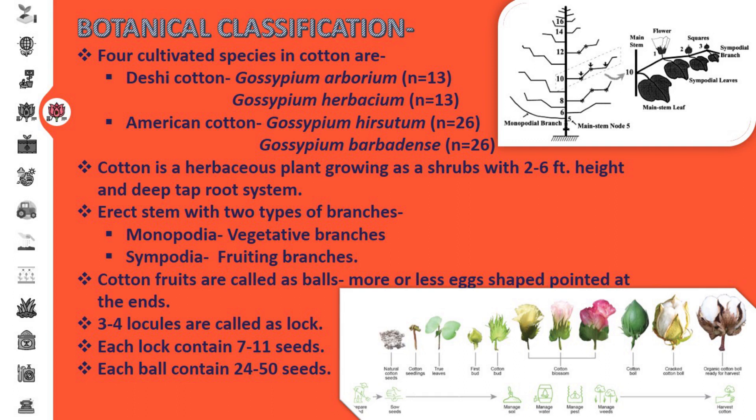In case of botanical classification, there are four cultivated species in cotton found in India, grouped into two categories: desi cotton and American cotton. The two species under desi cotton are Gossypium arboreum and Gossypium herbaceum, with chromosome number n equal to 13. In American cotton, there are two species: Gossypium hirsutum and Gossypium barbadense, with chromosome number n equal to 26. Basically, cotton is a herbaceous plant growing as a shrub with a height of two to six feet, and it has a deep taproot system.